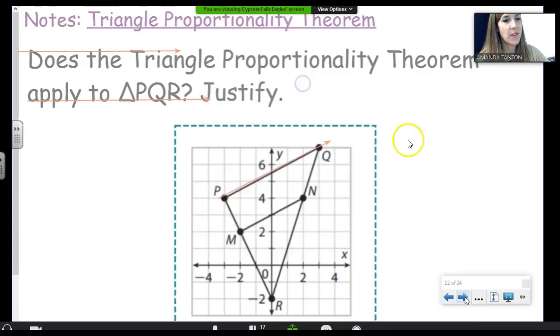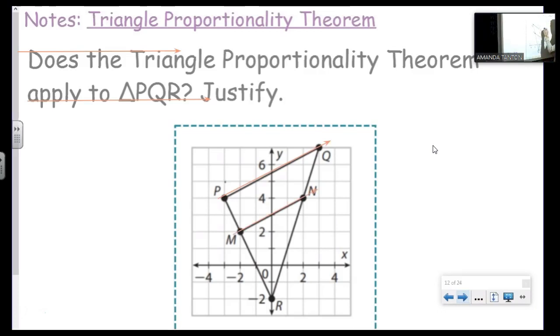So let's find the slope of PQ and MN. Rise, 1, 2, 3. Run, 1, 2, 3, 4, 5, 6.